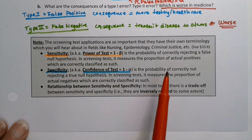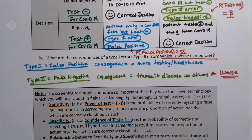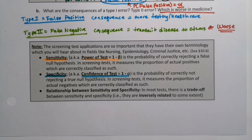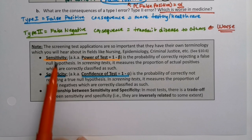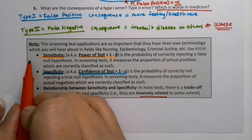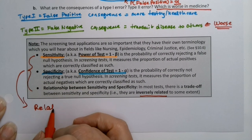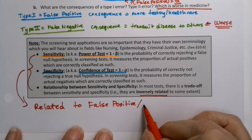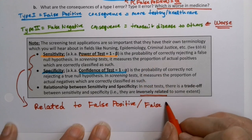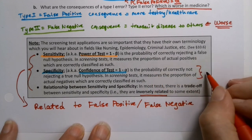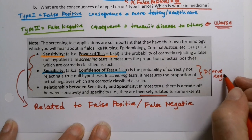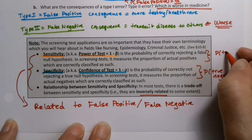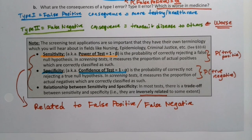Just like with false positive and false negative, and just like with alpha and beta, there is a tradeoff between sensitivity and specificity. If you try to raise sensitivity, you'll lower specificity and vice versa. Sensitivity is the proportion of true positives caught by the test; specificity is the proportion of true negatives caught by the test. These are related to, but not the same as, false positive and false negative rates.